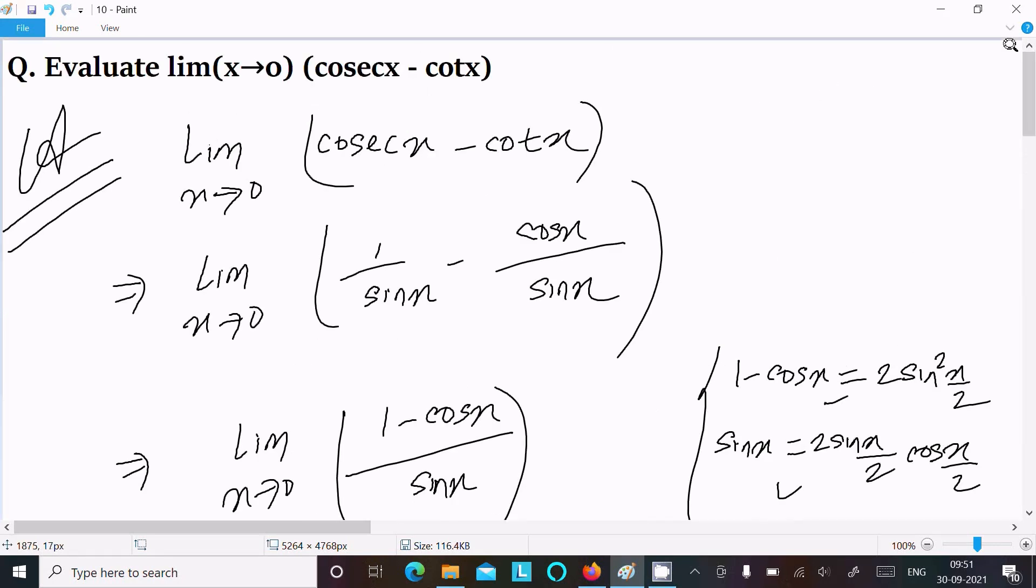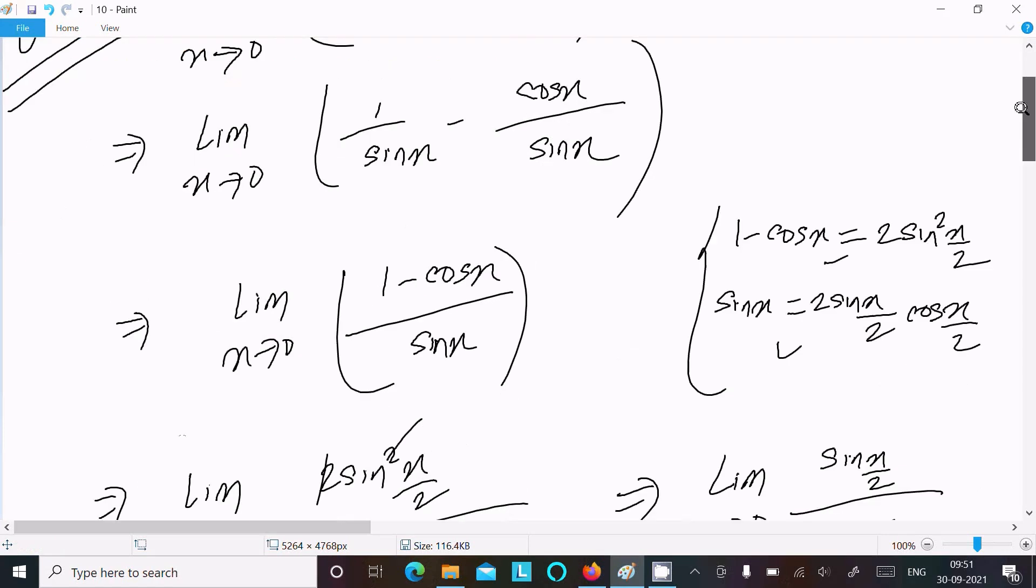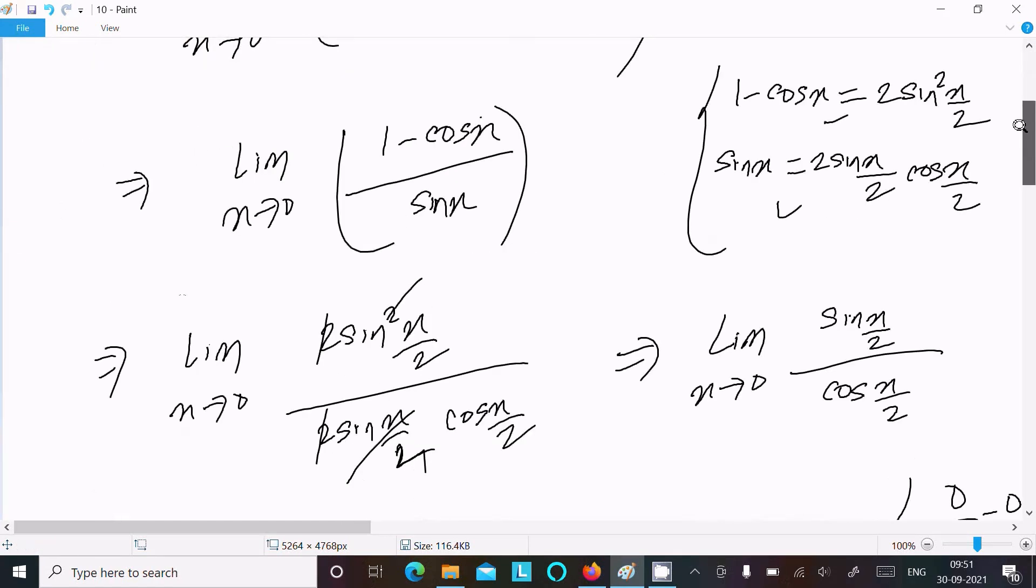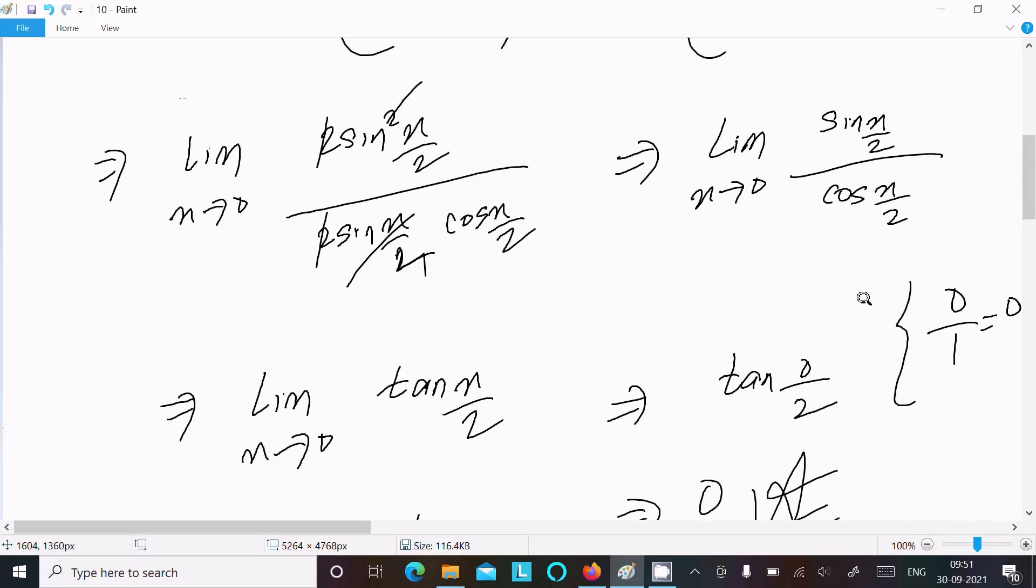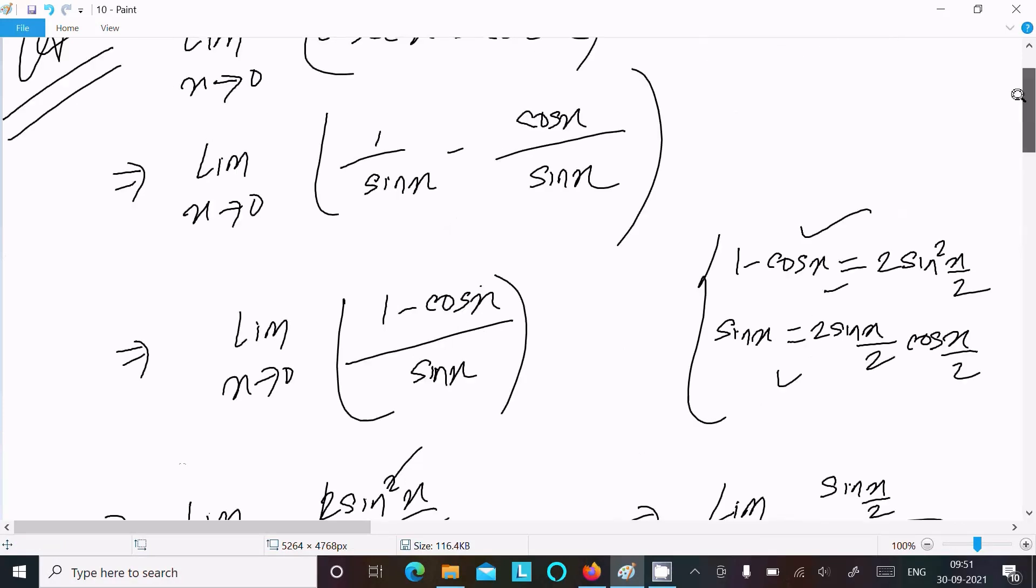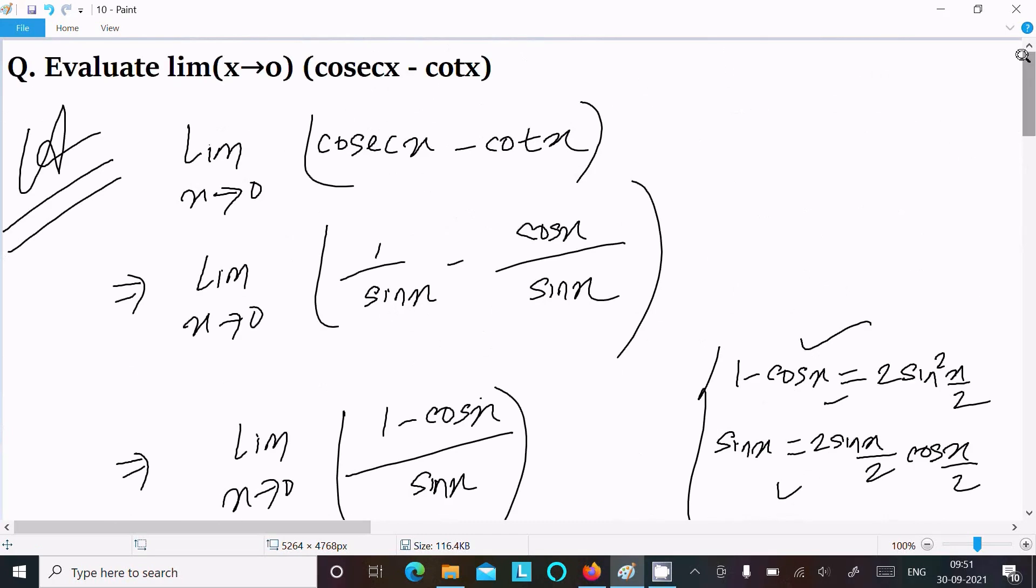One more time to repeat: write the given expression, convert cosec x minus cot x to sin and cos form, use the two formulas, then you can easily get the output. After canceling, tan 0 gives the value 0. So this is the way we can evaluate this limit question. This video is over, thanks for watching, see you next week.